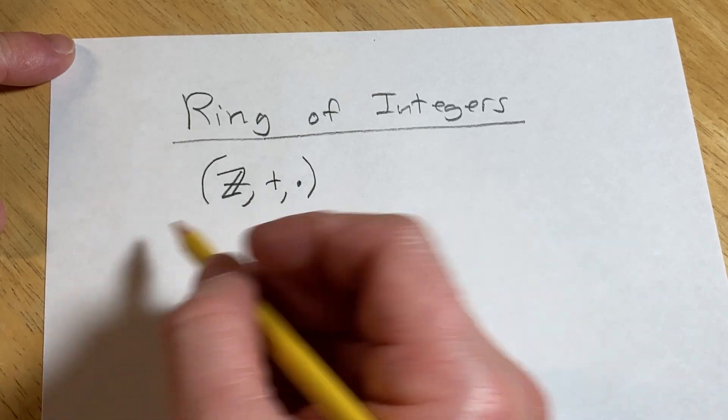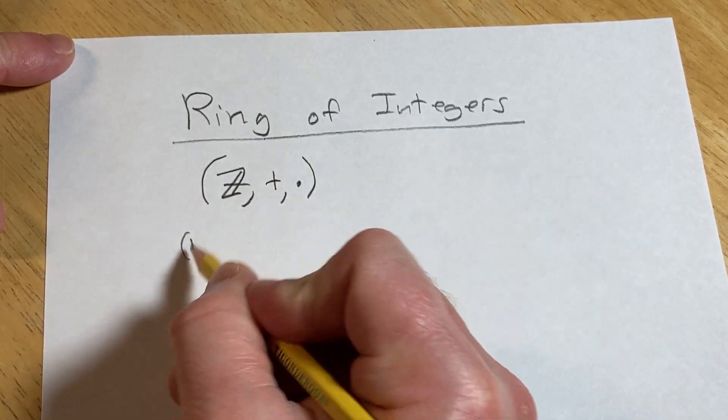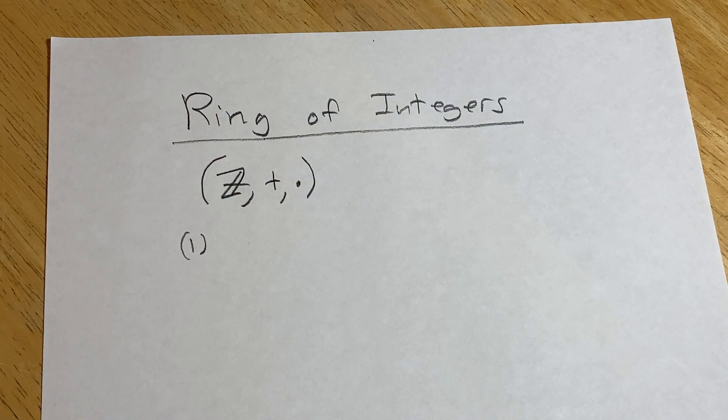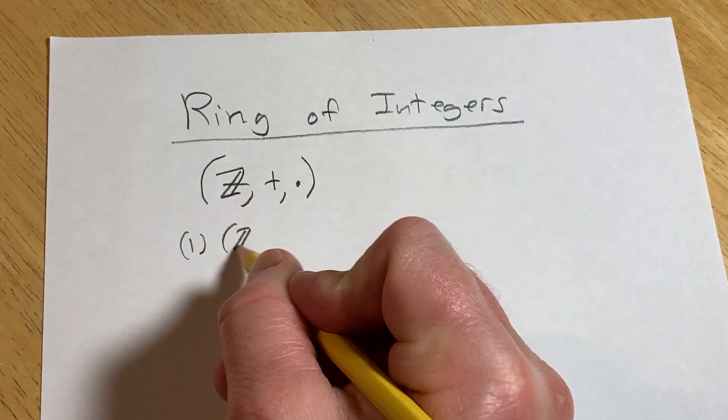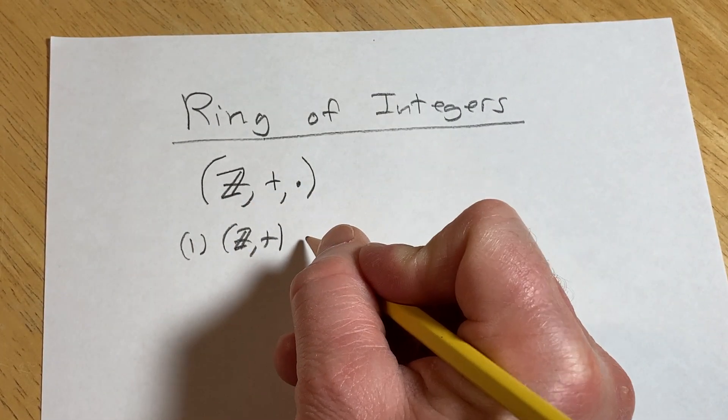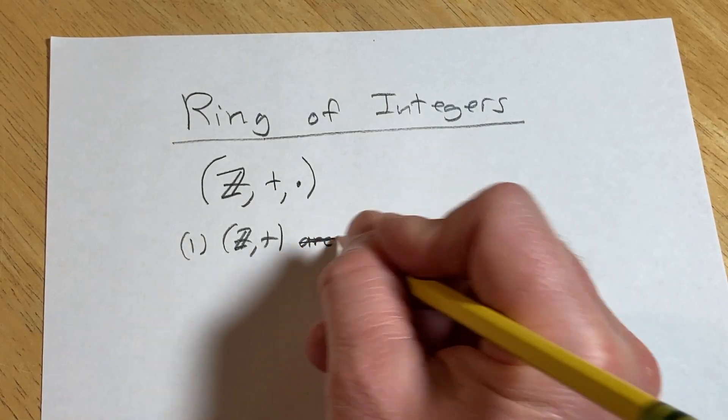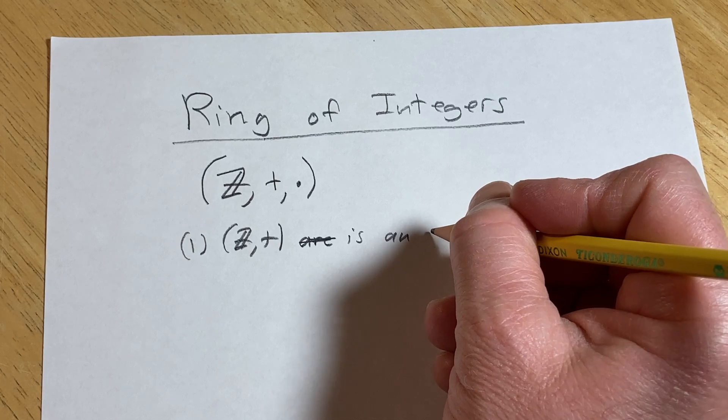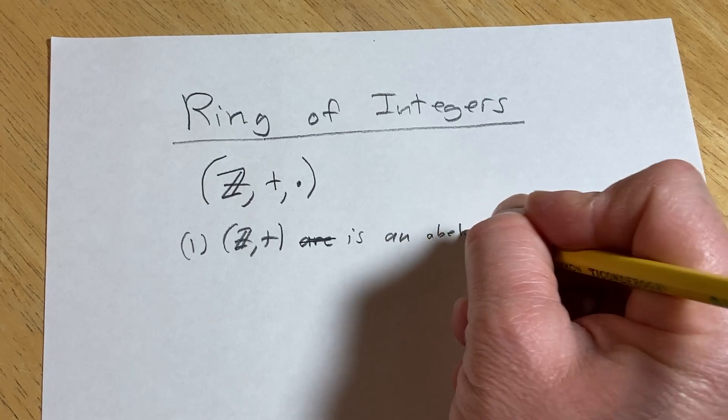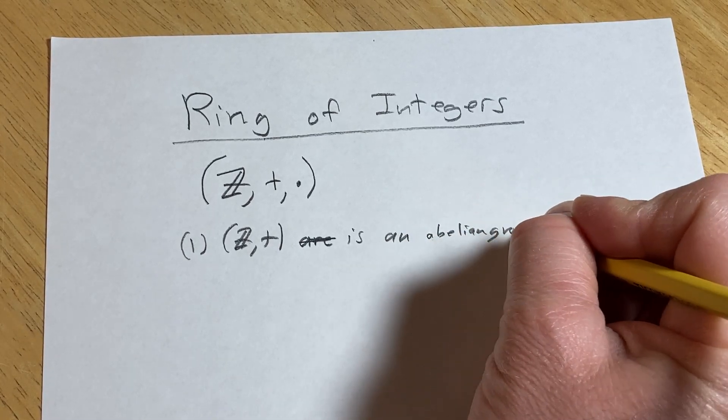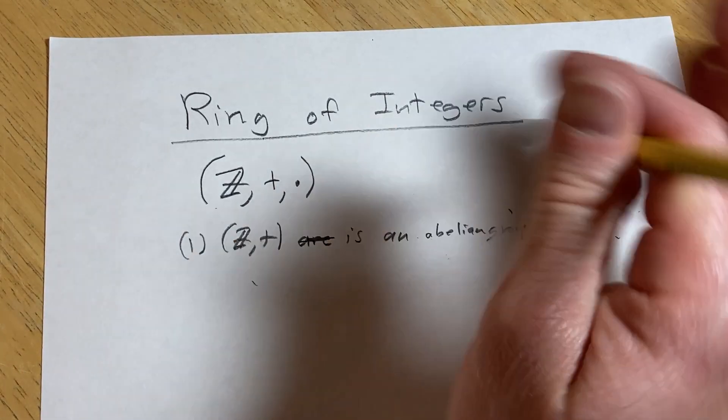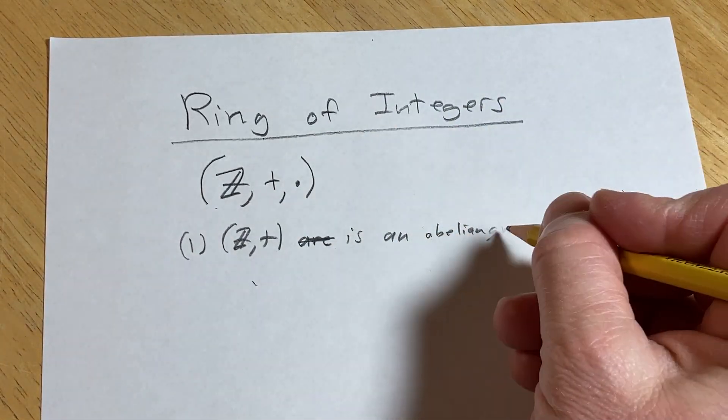The first condition is that this set together with addition forms an abelian group, and it does, right? So, the integers under addition is an abelian group. Z is an abelian group. That's two words, not one word. Handwriting is deteriorating.